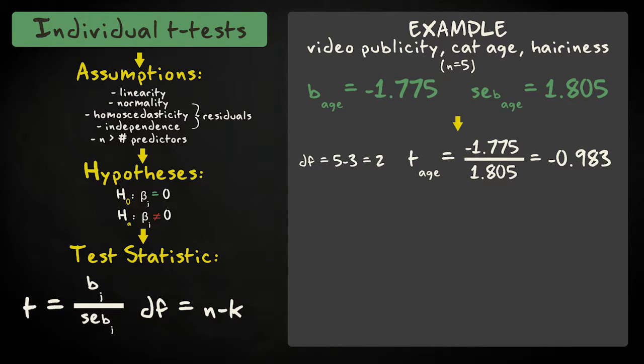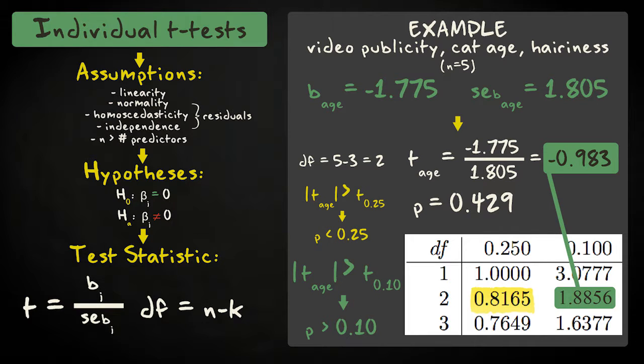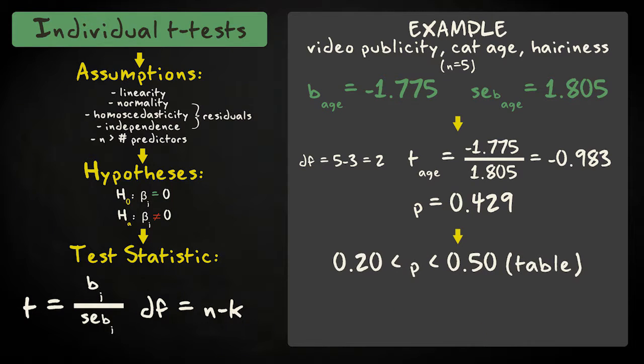With 5 minus 3 equals 2 degrees of freedom, we can now calculate or look up the p-value. The calculated two-sided p-value equals 0.429. If we use a table, we find that the right-sided p-value is at least smaller than 0.25 but larger than 0.10. So the two-sided p-value lies between 0.50 and 0.20. We can now conclude that cat age is not related to video popularity while controlling for hairiness.